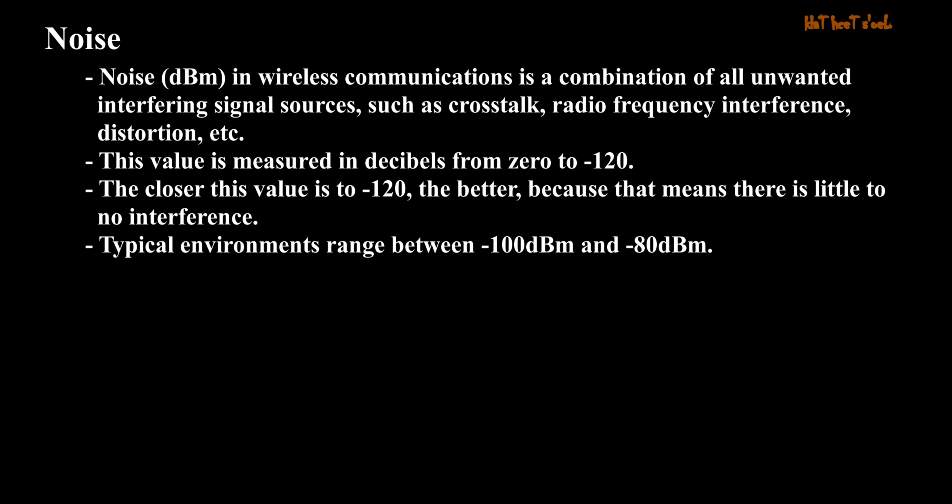Noise (dBm): In wireless communications, noise is a combination of all unwanted interfering signal sources, such as cross-talk, radio frequency interference, distortion, etc. This value is measured in decibels from 0 to minus 120. The closer this value is to minus 120, the better, because that means there is little to no interference. Typical environments range between minus 100 dBm and minus 80 dBm.